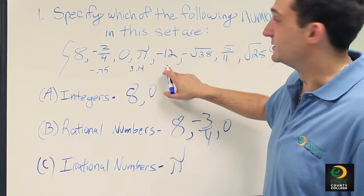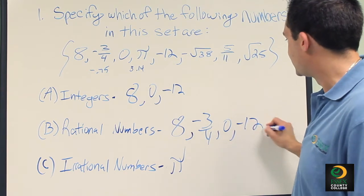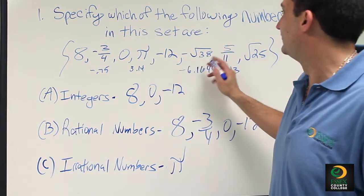Negative 12 is a negative whole number, so it's an integer by definition, and it makes it also a rational number.